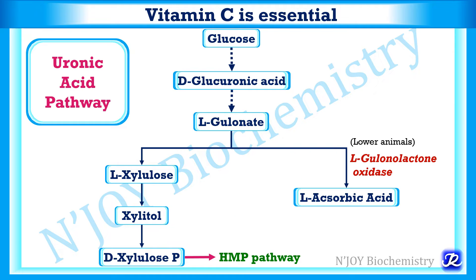In humans, vitamin C is essential and has to be supplied in the diet because it cannot be synthesized in the body. However, in plants and lower animals, it can be synthesized from glucose through the uronic acid pathway. The enzyme L-gulonolactone oxidase converts L-gulonate to L-ascorbic acid in plants and lower animals. However, this enzyme is not present in humans and higher primates, and that's why vitamin C cannot be synthesized in humans via the uronic acid pathway, making it an essential vitamin that has to be supplied in the diet.